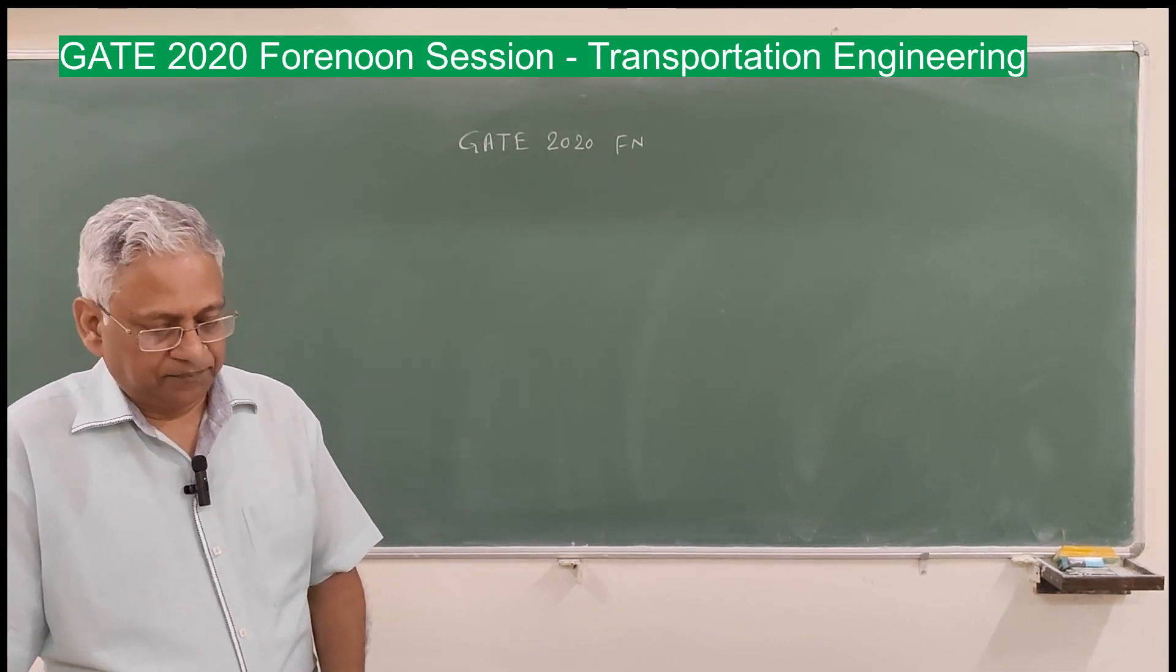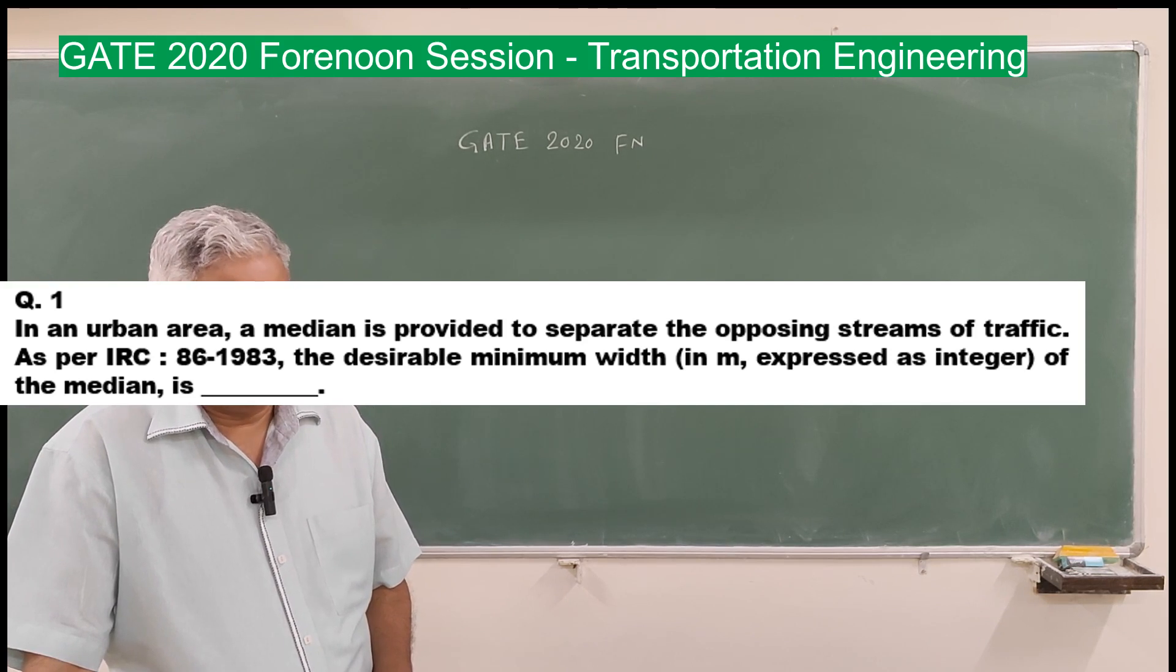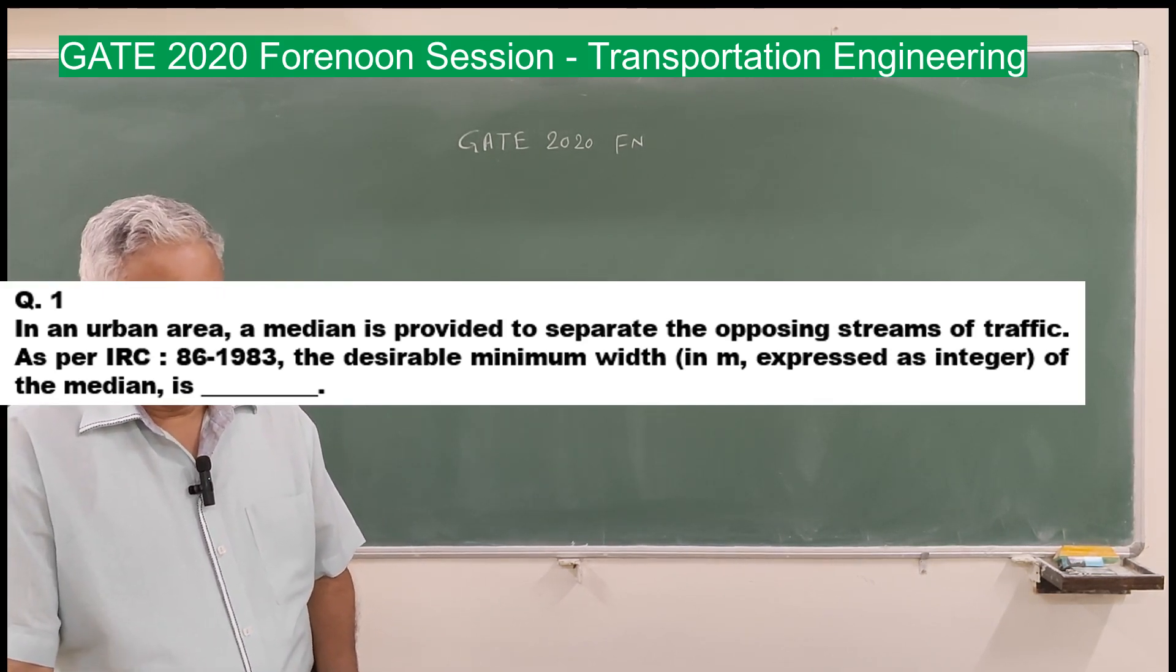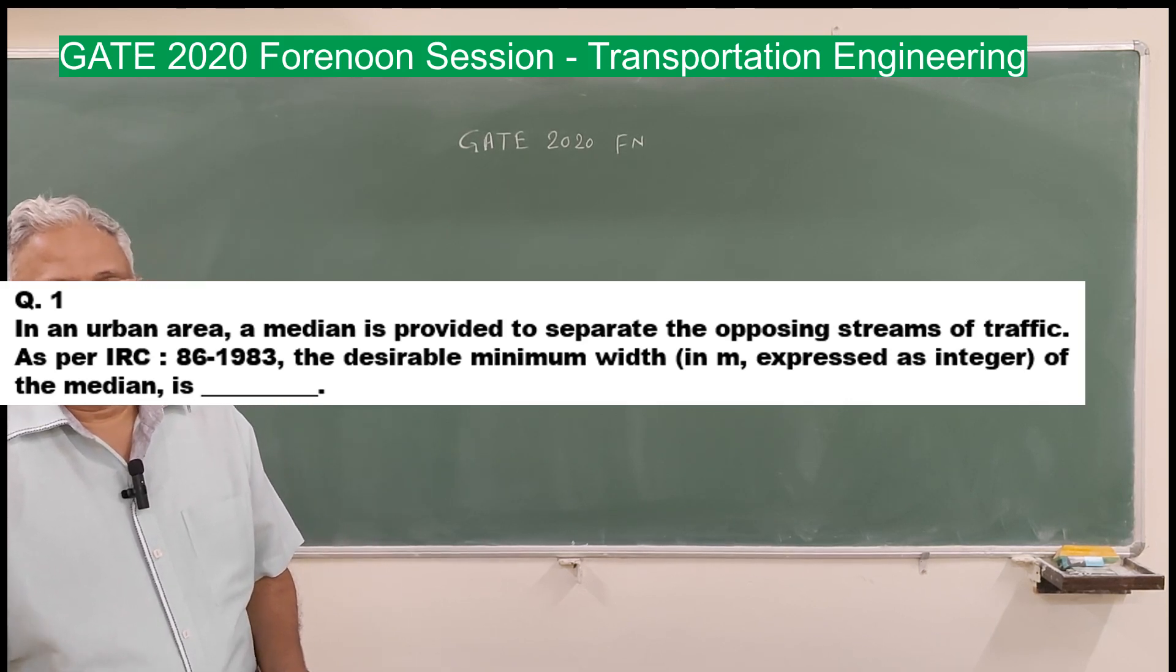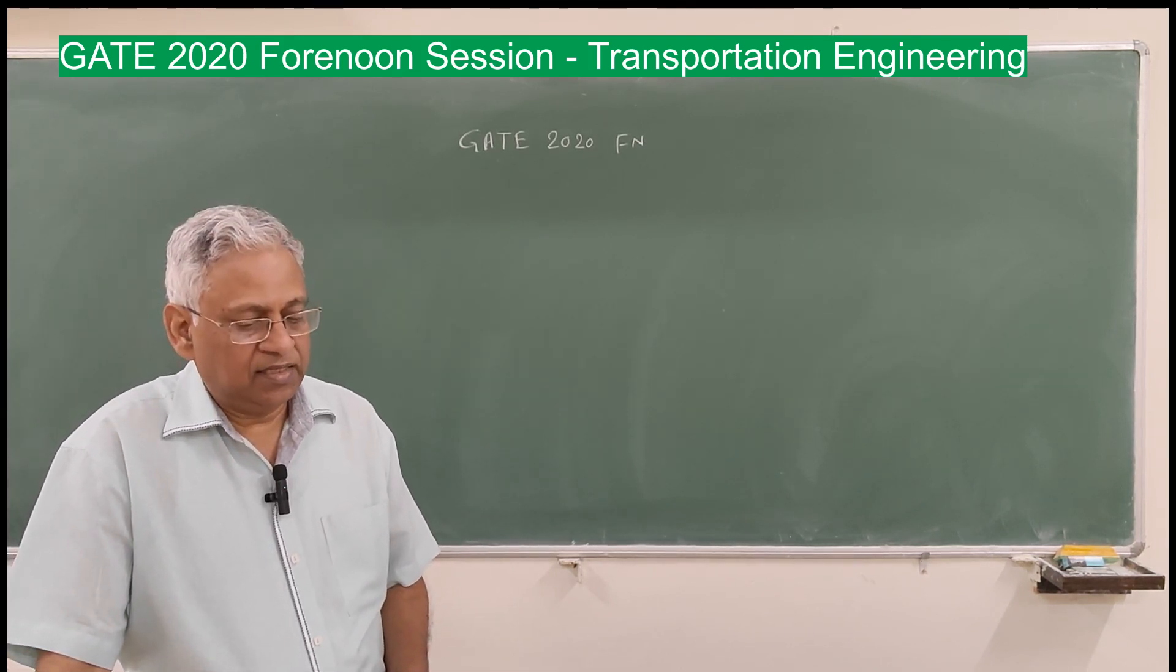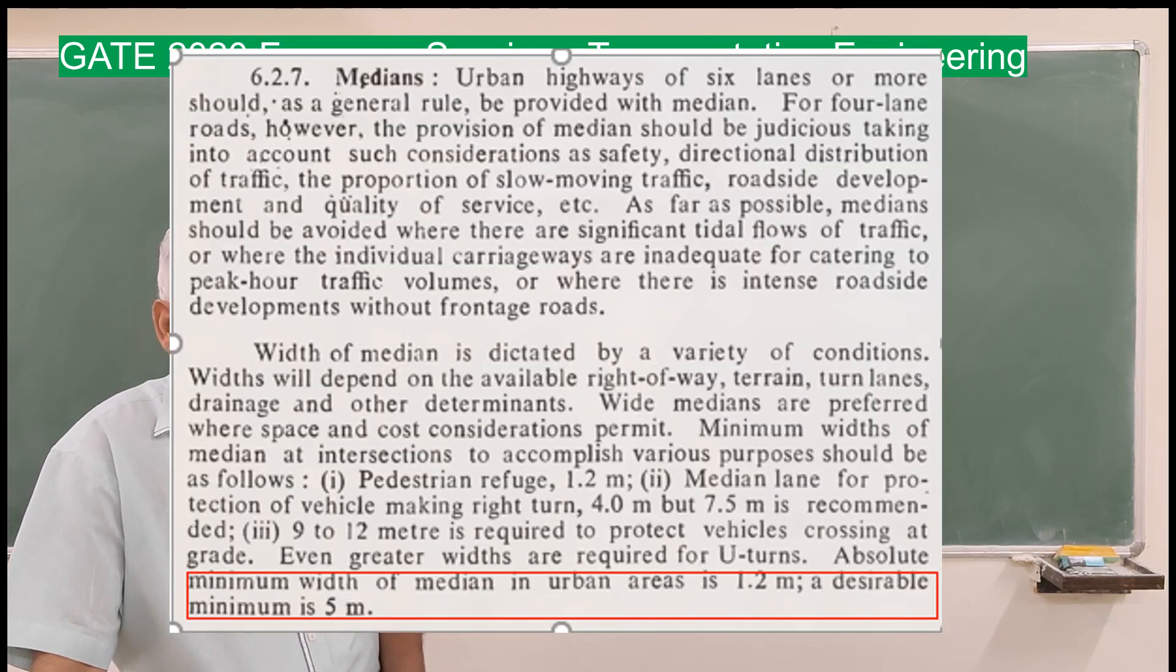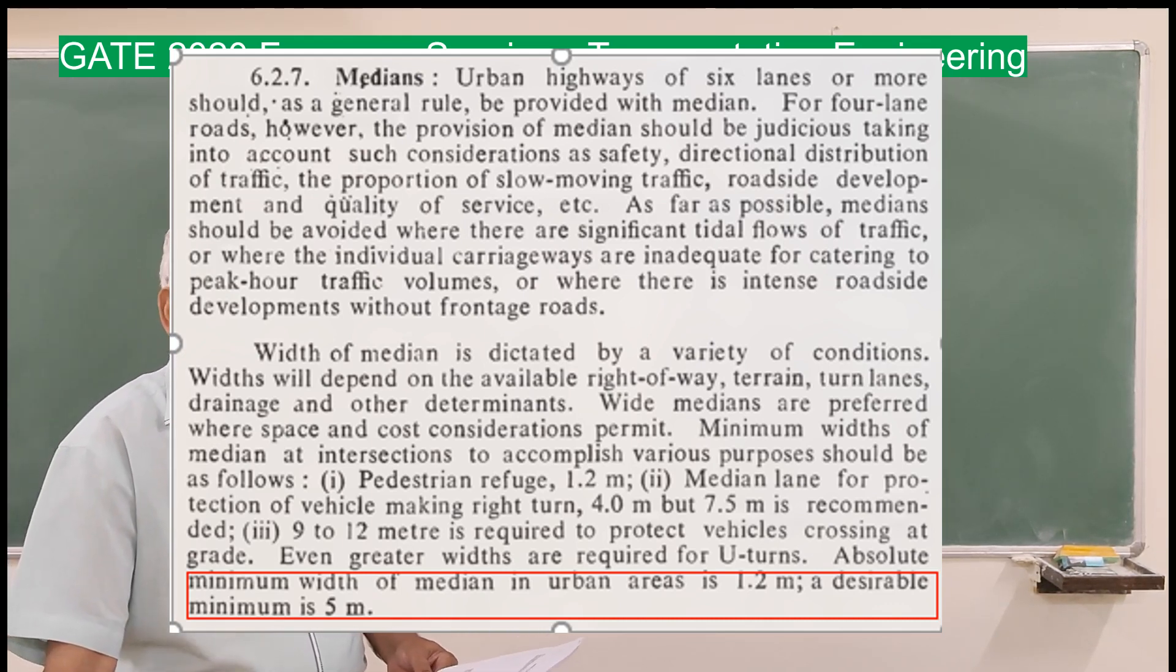The first question is: In an urban area, a median is provided to separate the opposing streams of traffic. As per IRC 86 1983, the desirable minimum width in meters expressed as integer of the median is. Here I am showing you the page from IRC 86 1983 which talks about medians. If you look at section 6.2.7, the last line says that absolute minimum width of median is 1.2 meter but desirable is 5 meter. Therefore, the answer to this question is 5 meter.